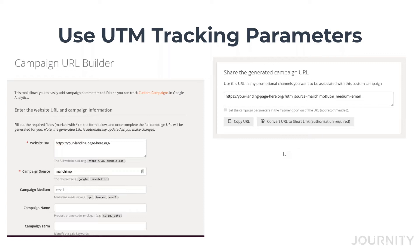One gotcha: I always recommend using all lowercase because Google will differentiate. If you had a capital M in Mailchimp, that would show up as different from a lowercase m. Some people type it uppercase, some lowercase, some in camel case — and then your data gets spread out and you end up having to try to combine it all together. Make it a policy to always use all lowercase.